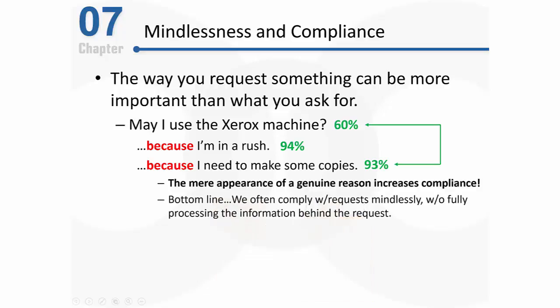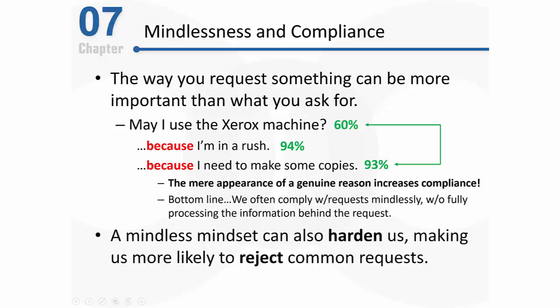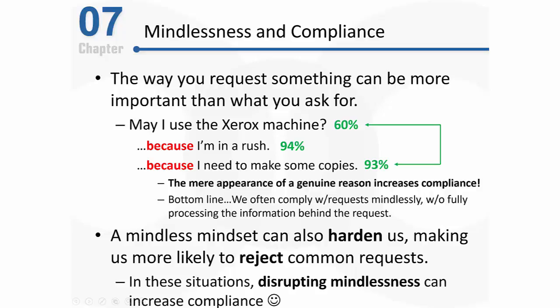What we're learning is that the mere appearance of a genuine reason increases compliance. In the third condition the person didn't really have a genuine reason, but it seemed like they were providing one simply because the request was formatted like a typical request with a reason. The bottom line is that we often comply with requests relatively mindlessly, without fully processing the information behind the request. In fact, this mindless mindset can also harden us and make us more likely to reject common requests we hear on a daily basis.